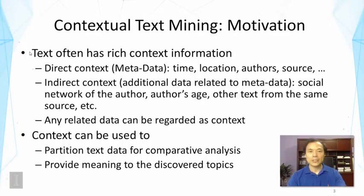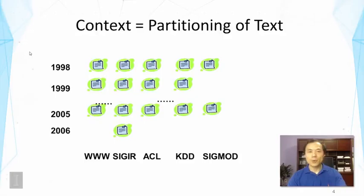Indirect text context refers to additional data related to the metadata. For example, from authors, we can further obtain additional context such as the social network of the author or the author's age. Such information is not in general directly related to the text, yet through the authors we can connect them. There could also be other text data from the same source, and any related data can be regarded as context.